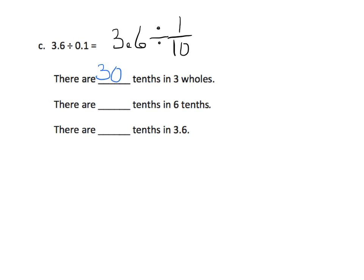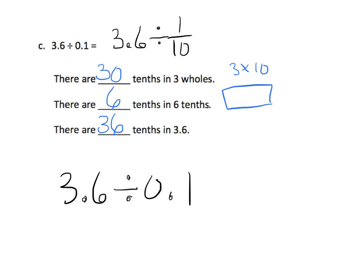Three times ten gives us thirty. Now, how many tenths are in six tenths? That's easy — the answer is six. So that means there are thirty-six tenths in 3.6. We don't have to multiply anything because we just use logic. So we've just learned that 3.6 divided by 0.1 is equal to thirty-six.